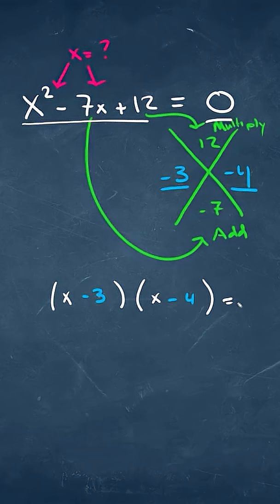Now, this is going to be equal to 0, and if that's the case, we're actually going to have two different answers. We'll have an x minus 3 equals 0, and an x minus 4 is equal to 0.